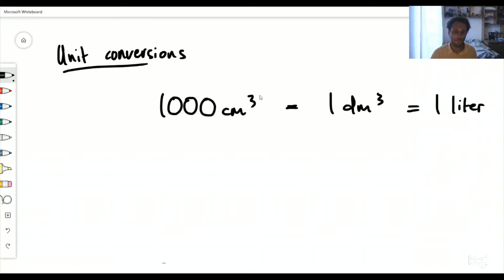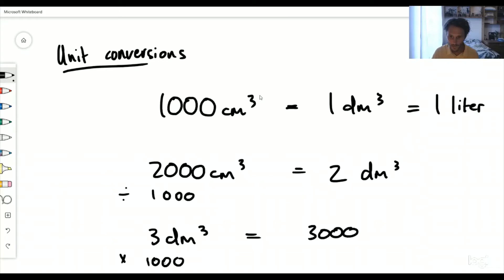Remember that one decimeter cubed is the same as one liter. So if I'm working with 2000 centimeters cubed, how do I get that into decimeters cubed? You simply divide by 1000 and your answer will be 2 decimeters cubed. Same as if I said how many centimeters cubed is 3 decimeters cubed, simply times by 1000. This is going to give me 3000 centimeters cubed.